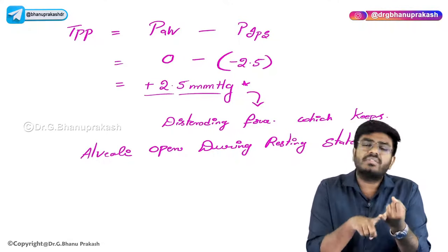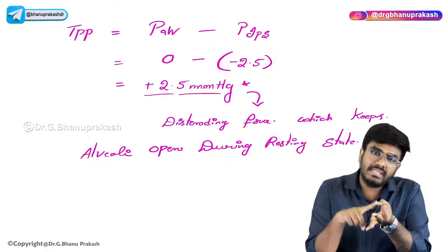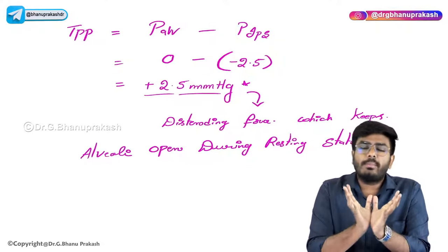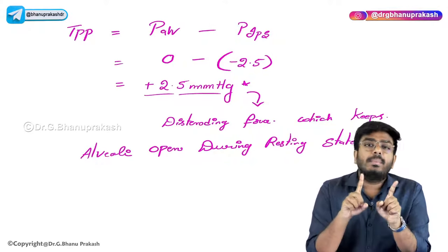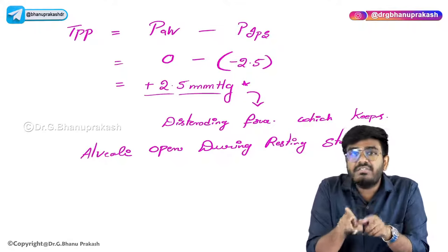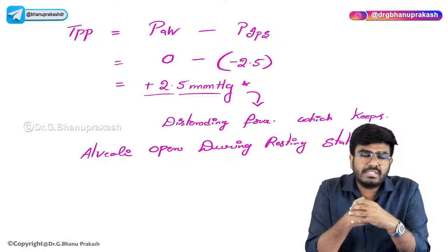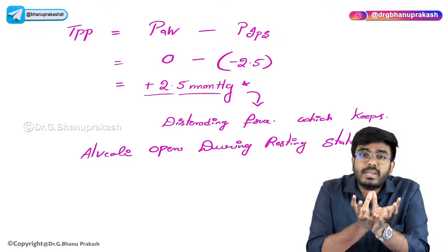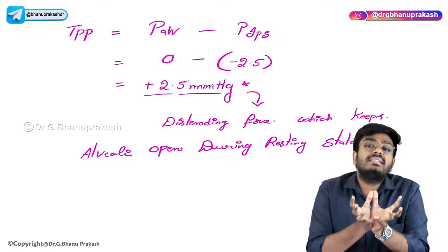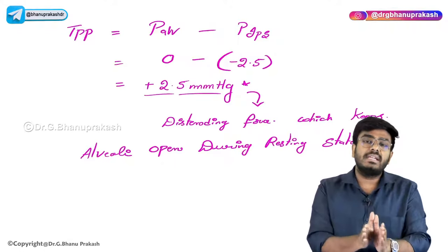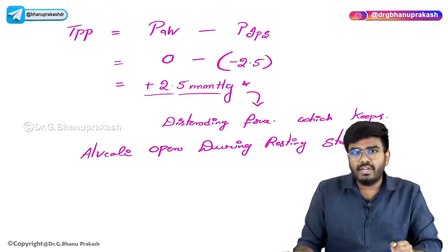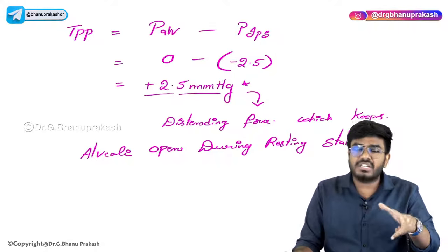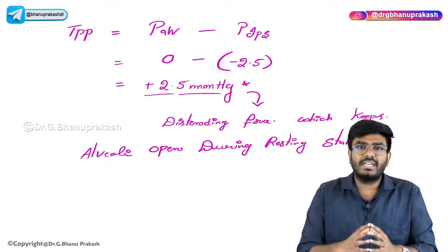To summarize: we discussed muscles of inspiration, muscles of expiration, and during resting state, alveolar pressure is 0 mmHg, intrapleural pressure is minus 2.5 mmHg (a vacuum), and transpulmonary pressure is plus 2.5 mmHg — the distending force that keeps alveoli open at rest. In the next video, we will discuss pressure changes during inspiration and expiration, and why air enters the lungs. Thank you.